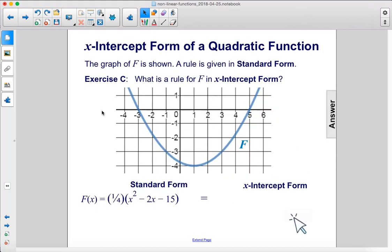Exercise C: What is a rule for f in x-intercept form? Here the standard form looks like this and so the x-intercept form looks like this. We can just leave this 1 over 4 in front and factor this portion to look like that.